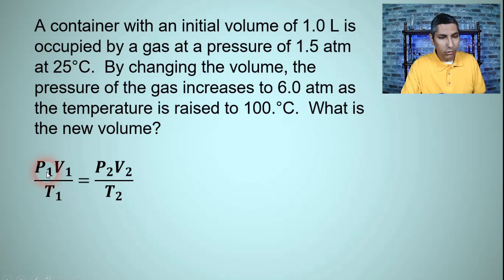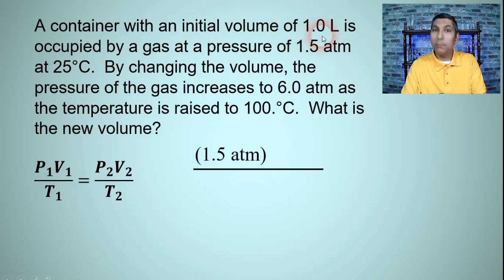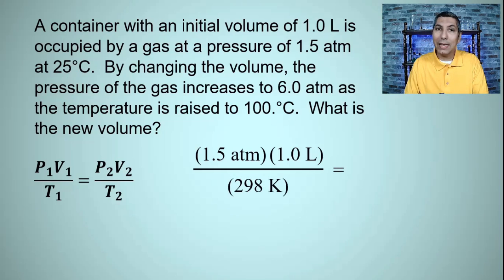P1 is our starting pressure and that is 1.5 atmospheres. V1 is our starting volume and that is 1.0 liter. So I plug that in for V1. In the denominator we're going to have T1, our starting temperature. That's 25 degrees Celsius. Of course I have to convert that to kelvin. So when I add 273 that gives me a T1 of about 298 kelvins.